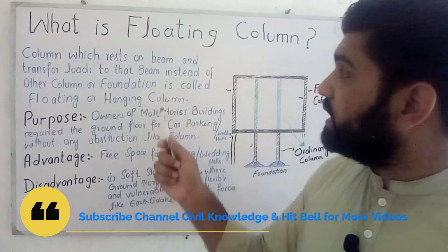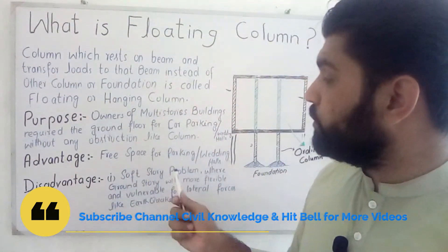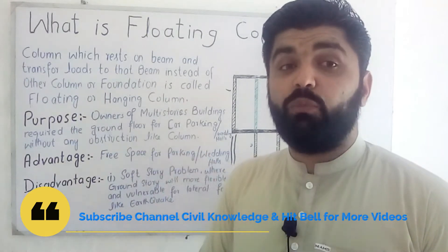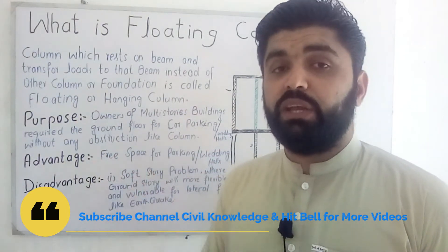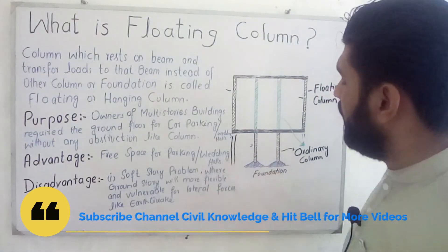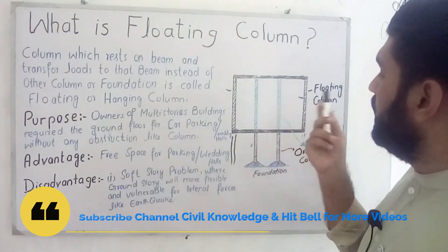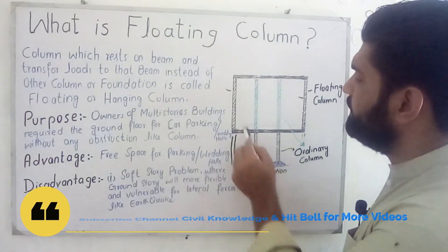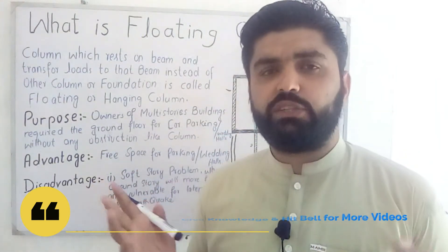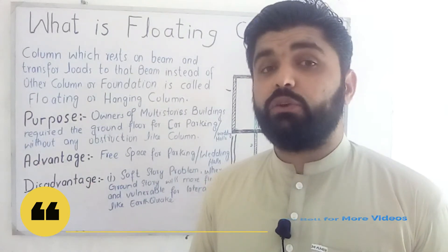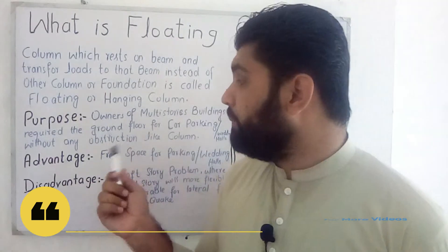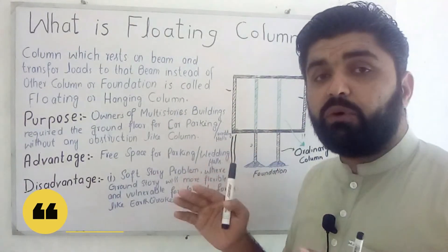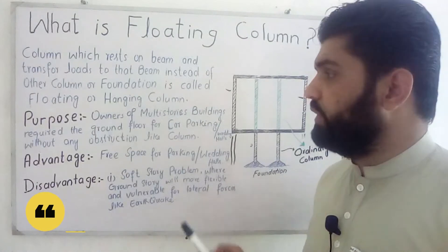What is the disadvantage of a floating column system? The disadvantage is the soft story problem. A soft story problem is when one story of a building is more flexible than the other stories. In a floating column system, the ground floor has fewer columns than the upper floors, making it more flexible. A story that is more flexible is more vulnerable to earthquake forces. So the floating column system can be easily damaged by lateral forces like earthquakes or wind forces.